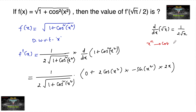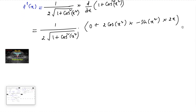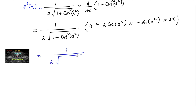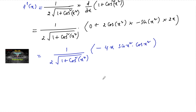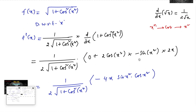So we have used three nested functions here by chain rule: the x^n power function, then the cos function, and then the x² function. This gives f'(x) = 1 over 2√(1 + cos²(x²)) times −4x·sin(x²)·cos(x²). Now we need to find f'(√(π/2)), meaning x = √(π/2).